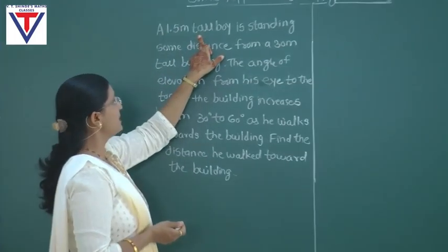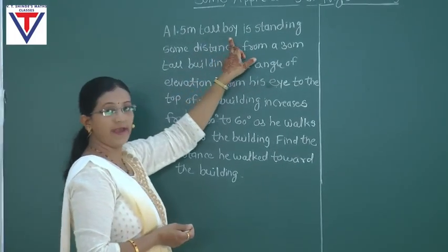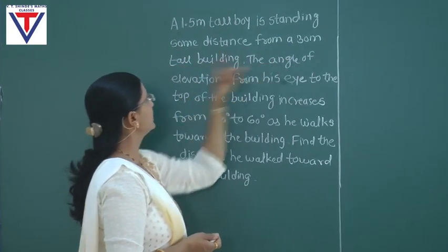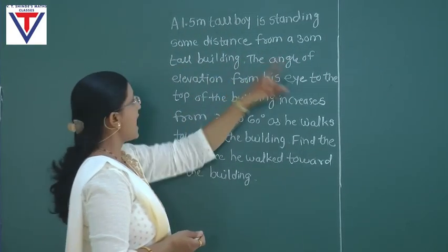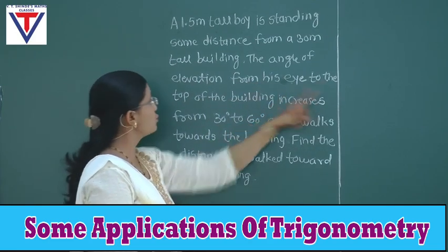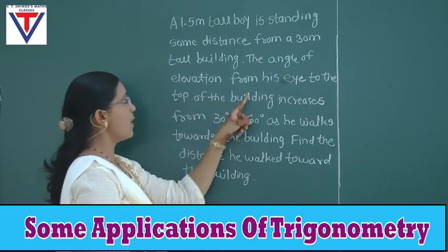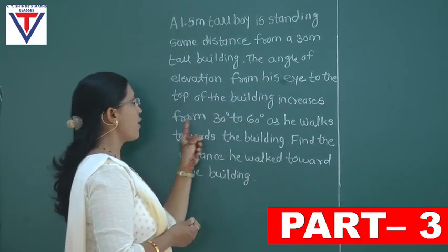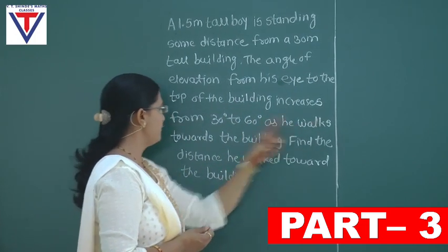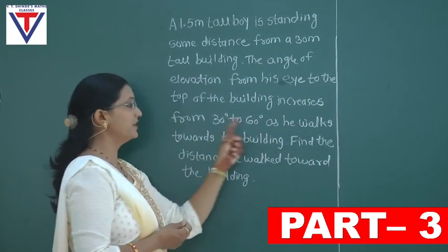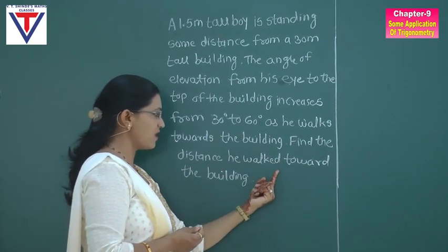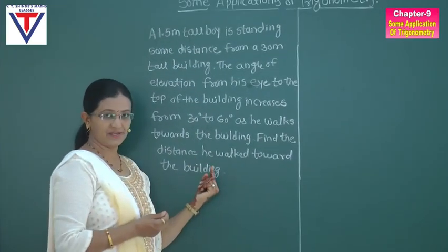A 1.5 meter tall boy is standing some distance from a 30 meter tall building. The angle of elevation from his eyes to the top of the building increases from 30 degrees to 60 degrees as he walks toward the building. Find the distance he walked toward the building.